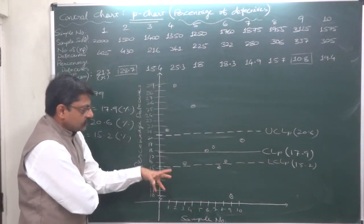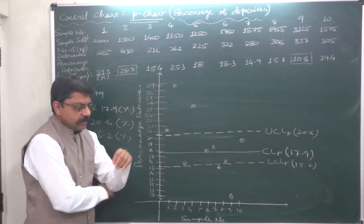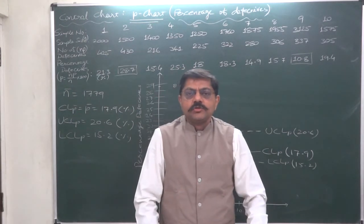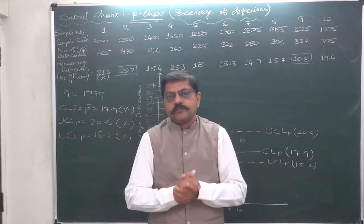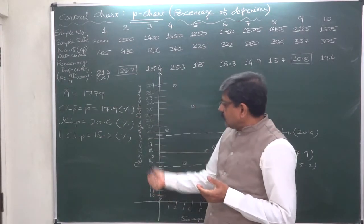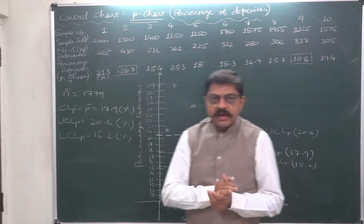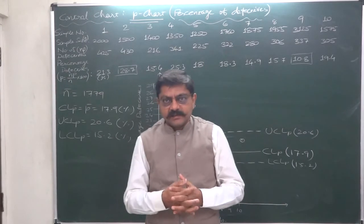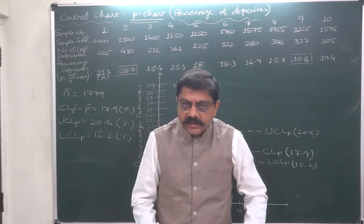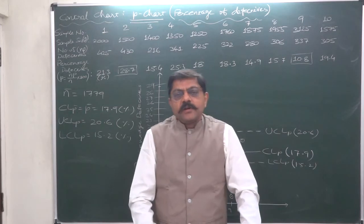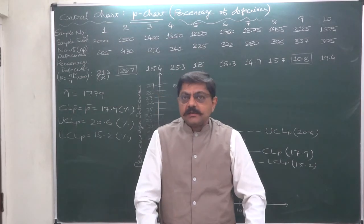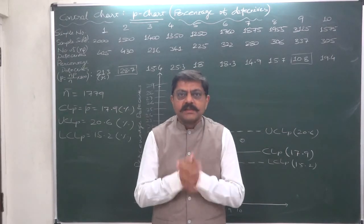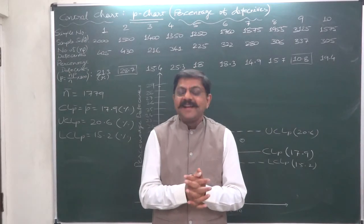So in this case we conclude that the process is not under control because so many points are either above the UCL or below the LCL. I hope this lecture proves very much useful to you to understand how to draw the percentage defective chart as well as how to draw a control chart where the samples are of unequal size. Don't forget to like this lecture and all my other lectures. Don't forget to visit and subscribe to my channel. Do recommend my channel to all because it is very much useful for students, professionals, or researchers. Thank you very much.